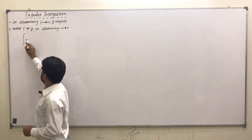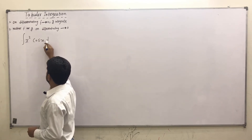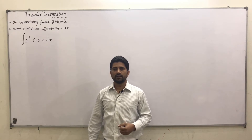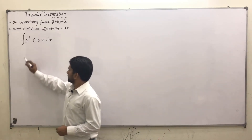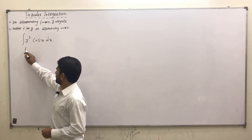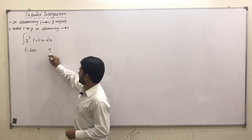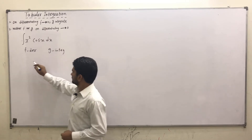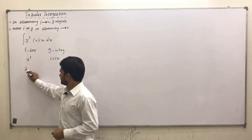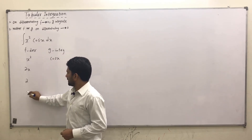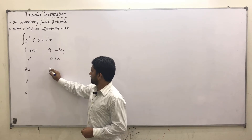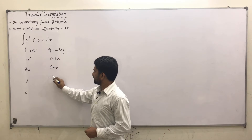First example: integrate x² cos(x) dx. We select one function as f and take its derivatives, and the other as g and take its integrals. Here f is x². The derivative of x² is 2x, the derivative of 2x is 2, and the derivative of the constant is zero. For g, the integral of cos(x) is sin(x), and the integral of sin(x) is minus cos(x).